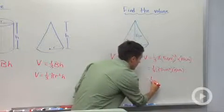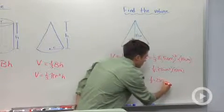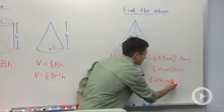So this is going to be one-third times pi. Twenty-five times ten is two hundred and fifty. So we're going to say times two hundred and fifty cubic centimeters.